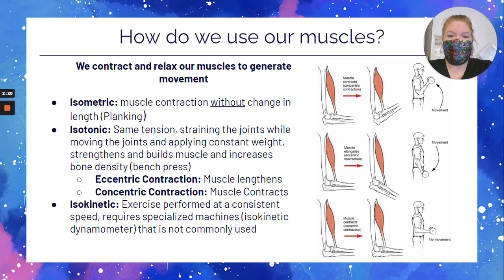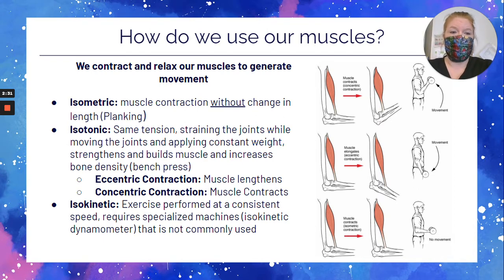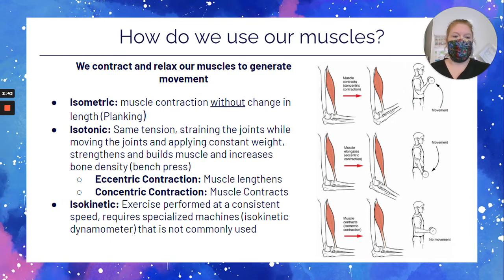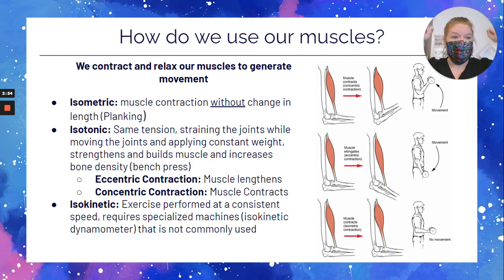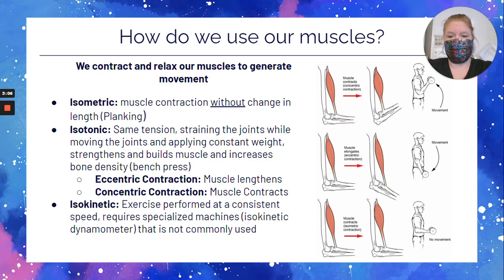Isotonic is when there's the same tension. 'Iso' means the same, but 'tonic' has to do with tension, so you're straining your joints and moving them but the weight is constant. It could be your own body weight — think just a regular push-up. You're using the same weight, your body, and moving. You're going to have lengthening and shortening. It could be doing an arm curl, holding a constant weight in your hand, with muscles that are lengthening and shortening — or a bench press, or any other exercise with weight where you're simply moving. Some of your muscles are shortening and some are lengthening at the same time. The muscles that lengthen are part of the eccentric contraction, and the muscles that contract are the concentric contraction.